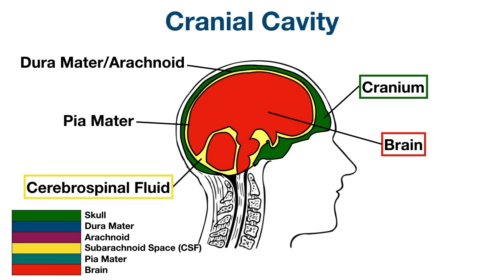Let's look at the diagram showing the layers. First we have the skull on the outside. Below the skull are three layers of membrane called the meninges. The outermost layer of the meninges is the dura mater, located beneath the skull. Below the dura mater is the arachnoid, the middle meningeal layer. There is a space below the arachnoid called the subarachnoid space, where the CSF is located. The innermost meningeal layer is the pia mater, which adheres closely to the brain. Hopefully this helps visualize the cranial cavity better.